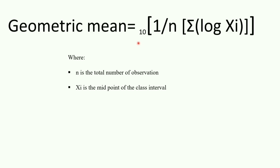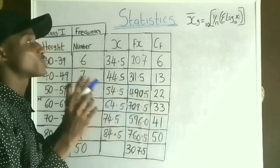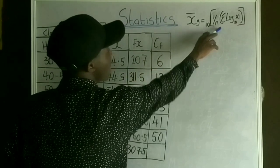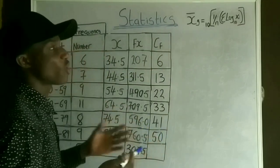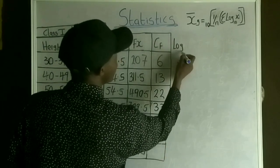The formula for geometric mean is: 10 raised to the power of (1/n × summation of log xi), where n is the total number of observations and xi is the midpoint of the class interval. We have already calculated xi. The antilog of the result gives the geometric mean.